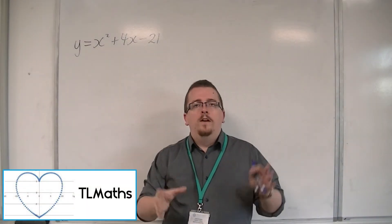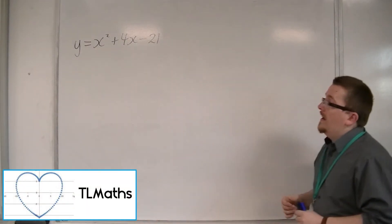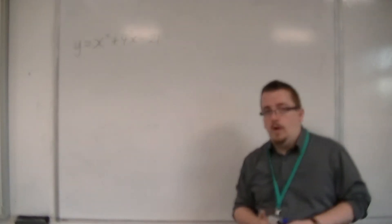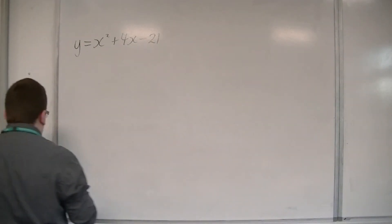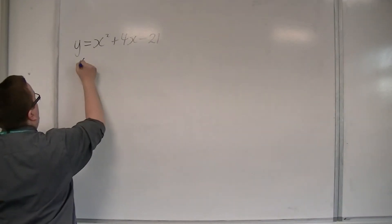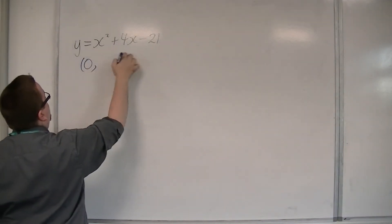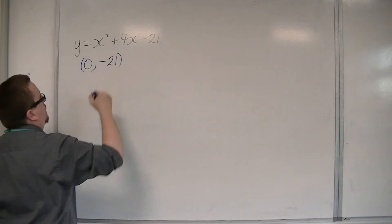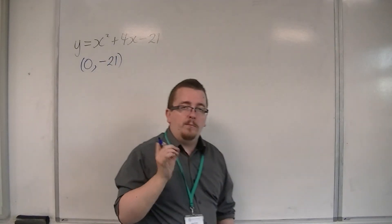So previously, we sketched y equals x squared plus 4x minus 21. We first of all worked out where it crossed the y-axis. So that was when x was 0. When x is 0, we get y is minus 21. So it crosses the y-axis at minus 21.